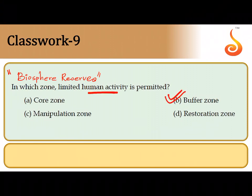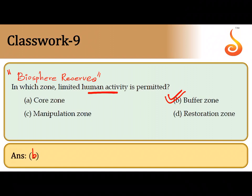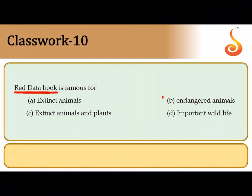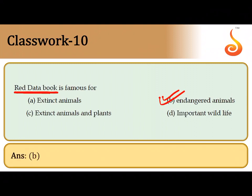Limited human activity is allowed in the buffer zone, where research centers, educational training centers, tourism, and recreational activities can be permitted. The manipulation zone is where human settlements can occur, including tribal communities. The tenth question: the Red Data Book is maintained by conservation unions like the World Conservation Union to make note of all endangered animals and plants — organisms currently facing the threat of extinction. It is the second option.